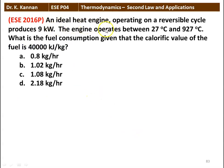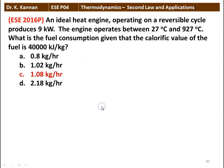Next question: an ideal heat engine operating on a reversible cycle produces 9 kilowatt. The engine operates between 27°C and 927°C. What is the fuel consumption given that the calorific value of the fuel is 40,000 kilojoules per kilogram? The options are: 0.8 kg/hr, 1.02 kg/hr, 1.08 kg/hr, or 2.18 kg/hr. The answer is 1.08 kilograms per hour. We will see how in the next slide.